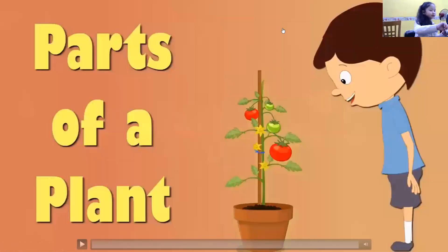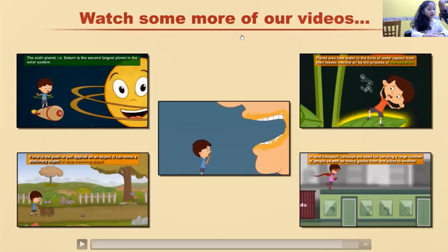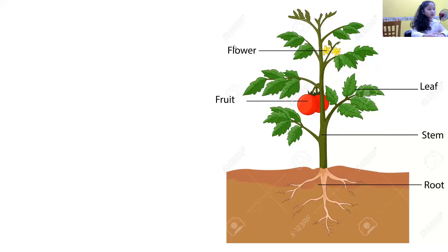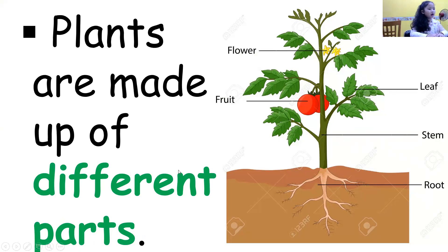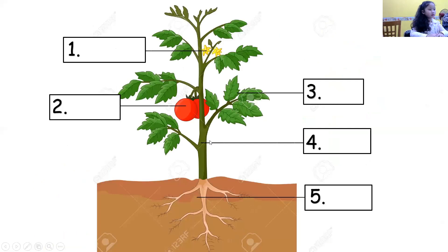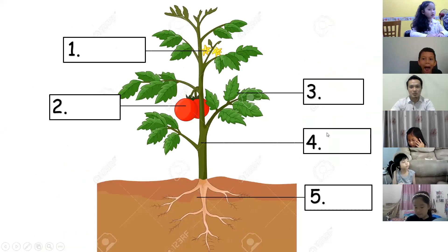I want you to watch the recording again. The video mentions that there are different parts of a plant — a plant has roots, a stem, leaves, fruit which is red or orange, and a flower. These are the parts of a plant. Plants are made up of different parts. So what is number one? I want you to answer — raise your hand please.